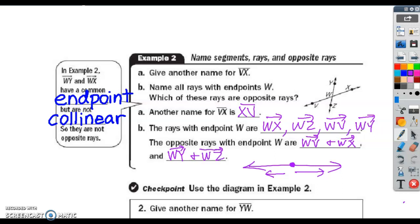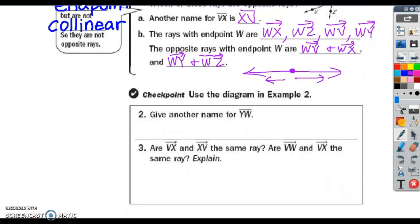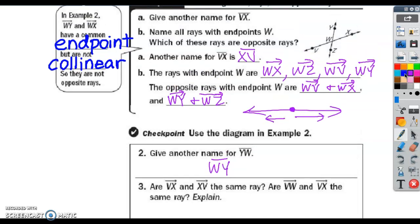This thing doesn't tell me how long my videos are. Oh yes it does. Ten minutes. Give another name for YW. You should have already done this. WY. Now, this one's kind of tricky. Are VX and XV the same ray? VX starts here and goes through X. And XV starts somewhere else, starts at X and goes through V. Do you see how those cover different points? That blue ray has different points covered than that green ray. Some of the points overlap, but not all of them. So in order for them to be the same ray, they've got to be identical. So no. And then are VW and VX the same? Why yes, they are.